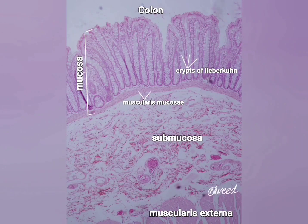The mucosa of the colon has no villi. It is lined by simple columnar epithelium, which contains columnar absorptive cells, also known as colonocytes, and goblet cells.